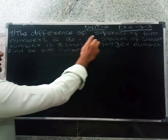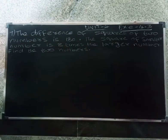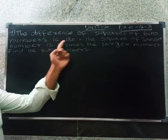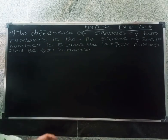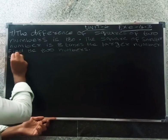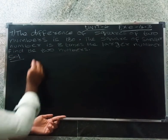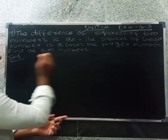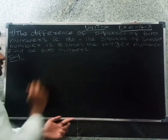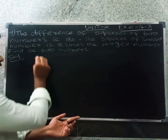The difference of squares of two numbers is 180. The ratio of squares of the two numbers is 1:18. The square of the smaller number is 8 times the larger number.